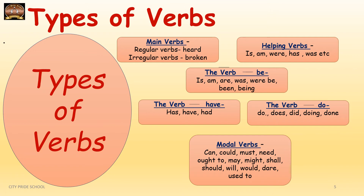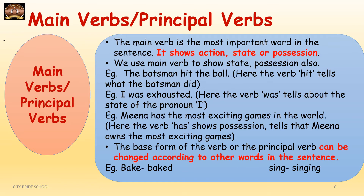First, we will deal with main verbs, which have two categories: regular verbs and irregular verbs. A main verb is the most important verb in a sentence. It shows action, it shows state, and it also shows possession. So the main verb does not necessarily only show action. For example, 'the batsman hits the ball' — here the batsman is the subject and hit is the action verb showing the action of hitting the ball.